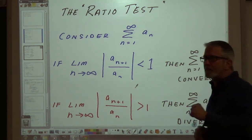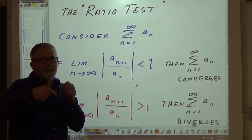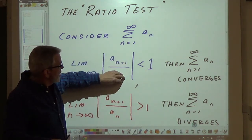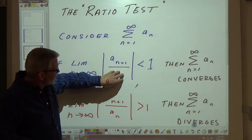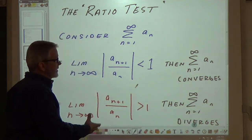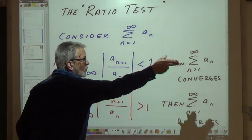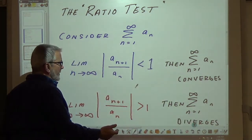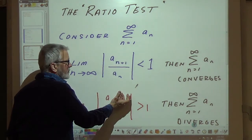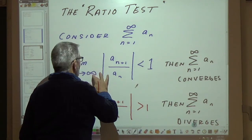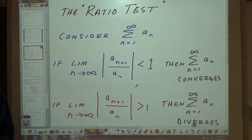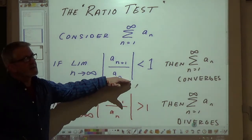Keep in mind, we looked at this when we were talking about geometric series — the ratio of the (n+1) term divided by the nth term to determine the common ratio. We're taking the limit as n goes to infinity of the absolute value of that ratio. If that limit comes out to less than 1, then that series converges.